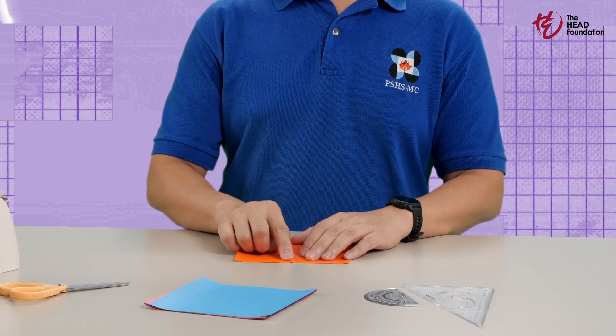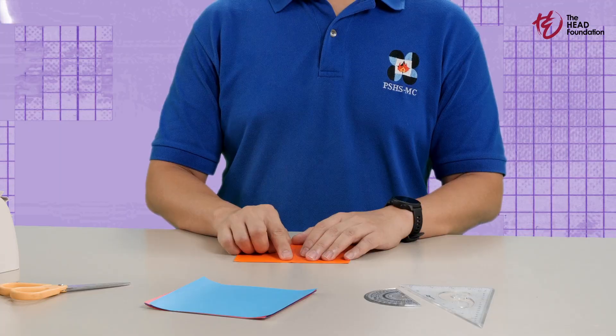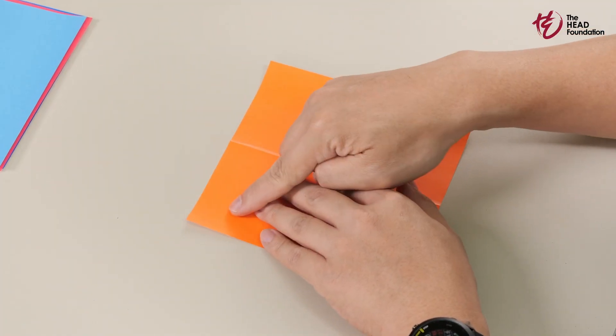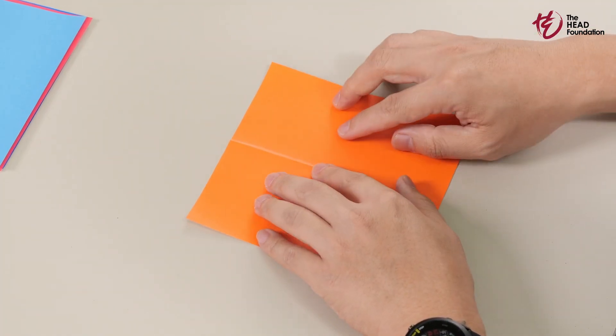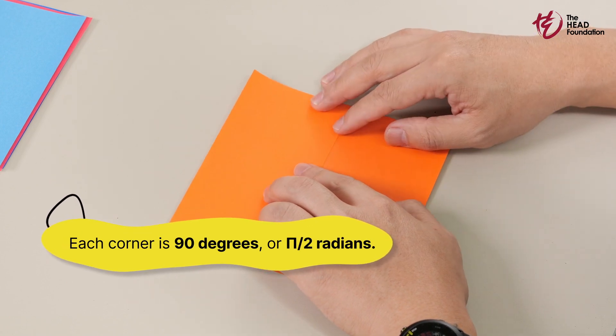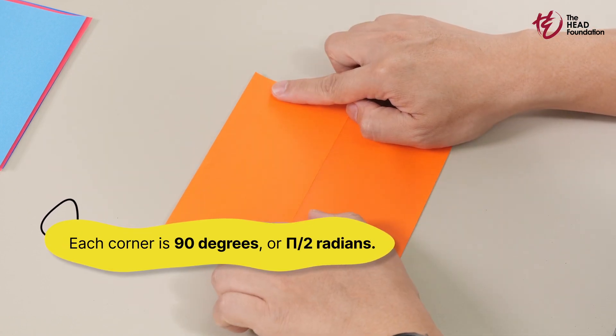Every edge and fold is a line on our paper and their intersections form angles. Now observe the corners of our origami paper. What do we see? Yes, they're perfect right angles.